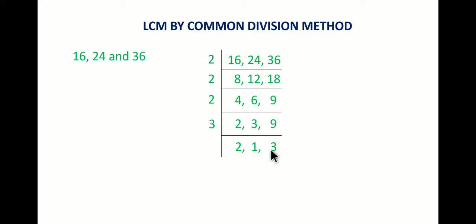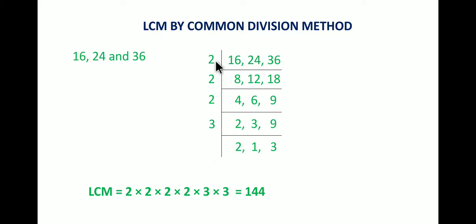So we are left with 2 and 3, which cannot be divided further and come down as they are. That gives us a total of four 2's and two 3's — that is 2 into 2 into 2 into 2 into 3 into 3. Multiplying all these numbers gives 144, which is the required LCM.